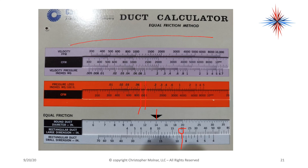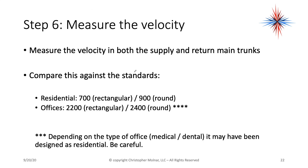Velocity is the speed of the air moving. We're also concerned about velocity. If I have a velocity pressure, it takes the actual fan into account and the movement of air — you can figure out how fast things are moving based on the CFM of the duct. We measure the velocity in both the supply and return ducts and compare against standards. For most residential environments, I want 700 feet per minute in my main duct work, or 900 for round duct work. Office areas: 2,200 in rectangular, 2,400 in round.